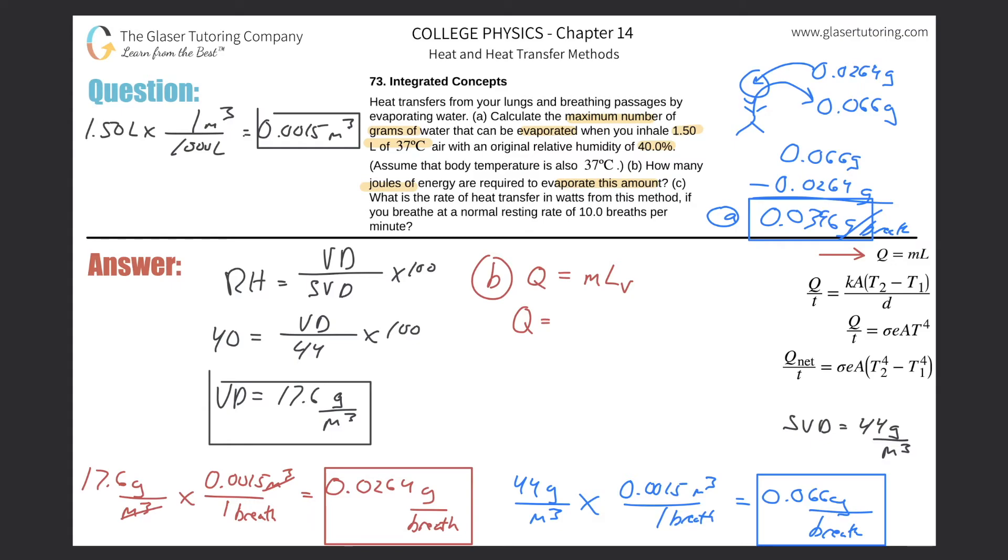So now, remember, I need to plug in the mass, but we have it in grams, 0.0396. Just divide that by 1,000 to get into kilograms. The latent heat of vaporization, you got to look that up. That's for water. This is a constant, 2,256 kilojoules. Convert that into joules by adding the three zeros.